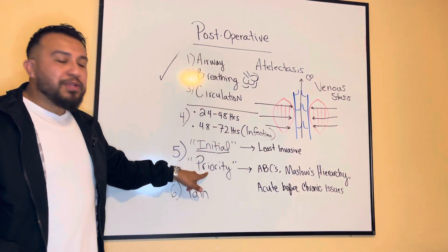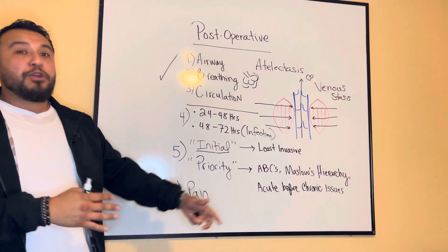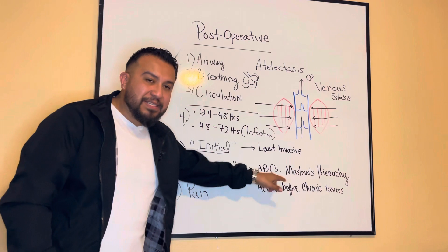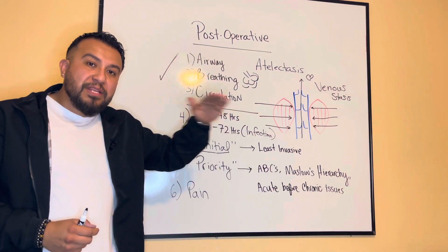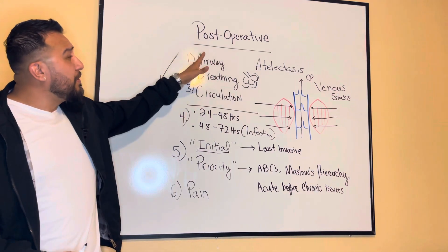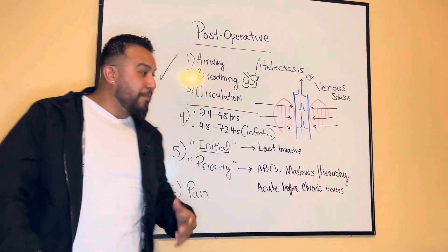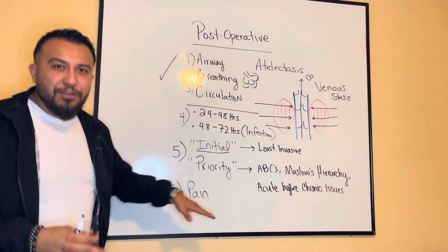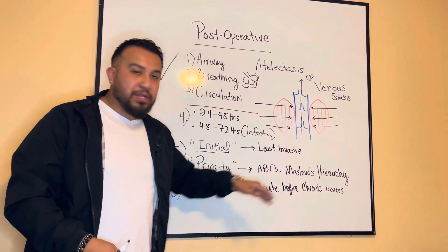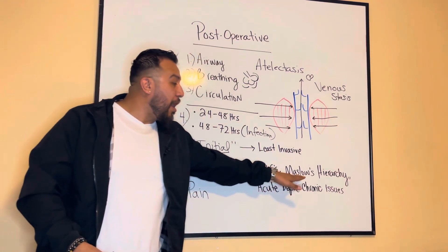Also consider the word 'priority.' Anytime you see 'which of the following is your priority,' the rule is to utilize ABCs. Is anything addressing airway, breathing, or circulation? This applies not only to the post-operative period, but to any patient. When the question asks for the priority intervention, always consider ABCs first. If it's not addressing those elements, then move on to Maslow's hierarchy of needs.